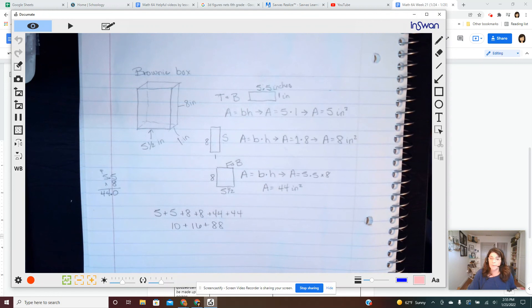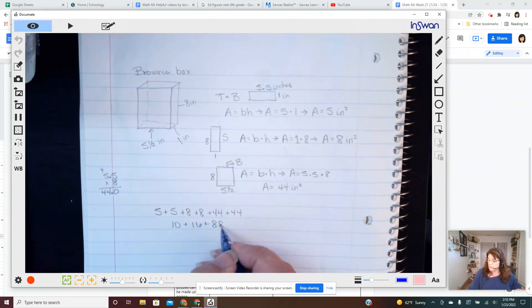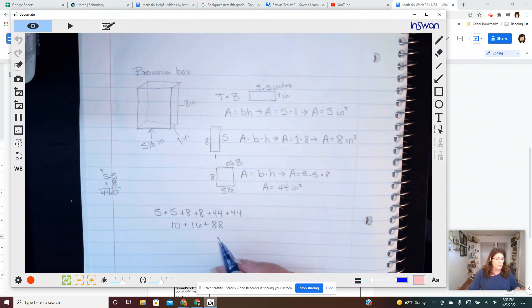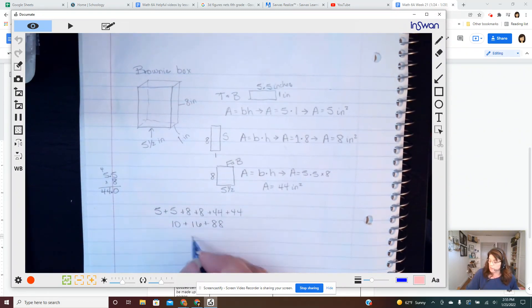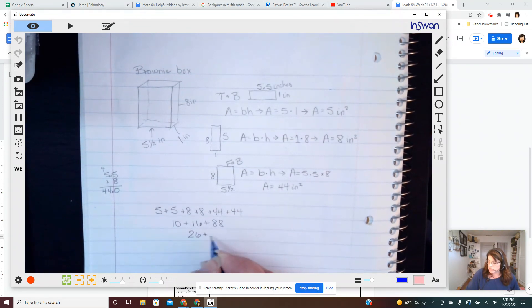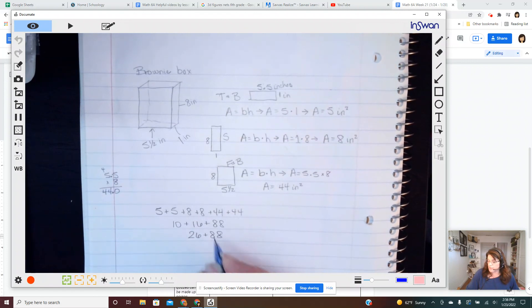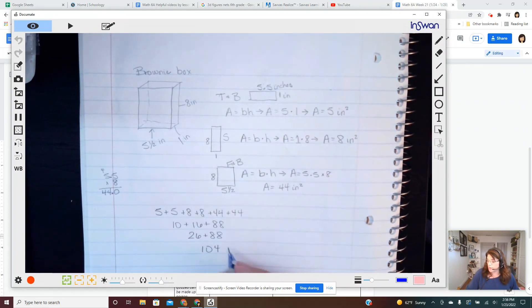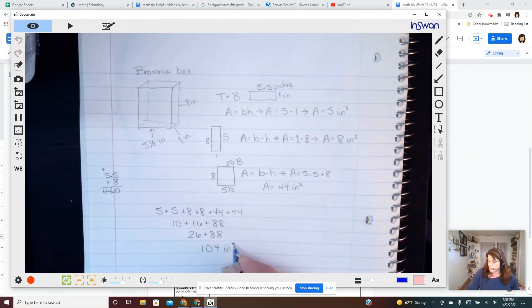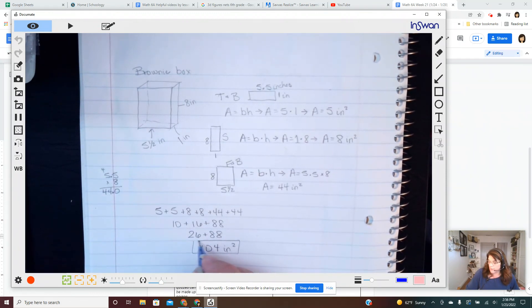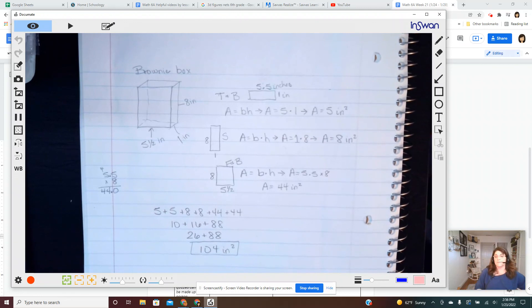And remember I told you if you want to use a calculator that's fine, you shouldn't need one for this, but if you wanted to you absolutely could. 26 plus 88. 104. This little brownie box, this little thing, 104 square inches of cardboard.